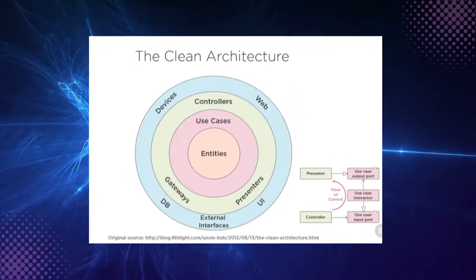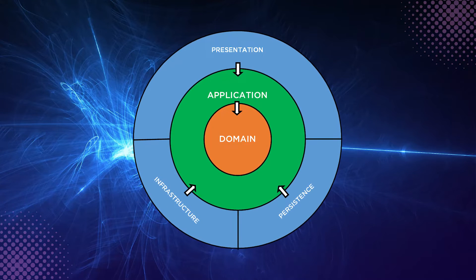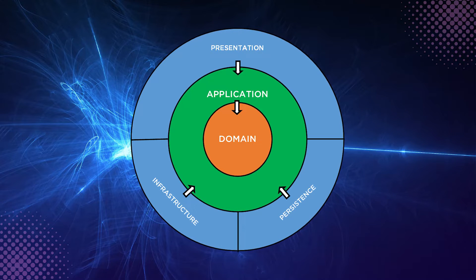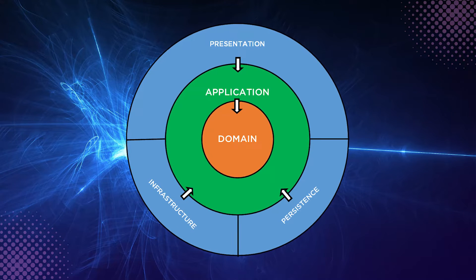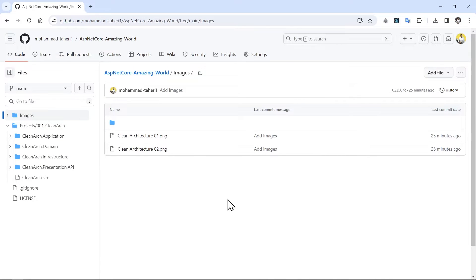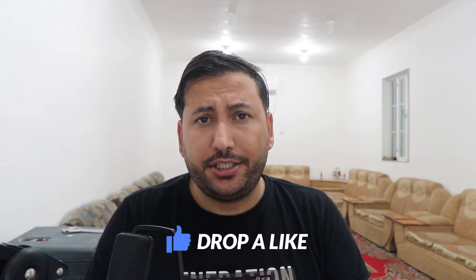If you want to implement a complicated project, you need to have a good architecture, and you can use clean architecture. In this tutorial, I'm going to implement a basic example of clean architecture using ASP.NET version 8. As you can see in these images, there are different implementations, so you can have different layers like application, domain, presentation, persistence, and infrastructure. In this video, I will implement infrastructure and persistence as one layer, along with domain, application, and presentation layers.